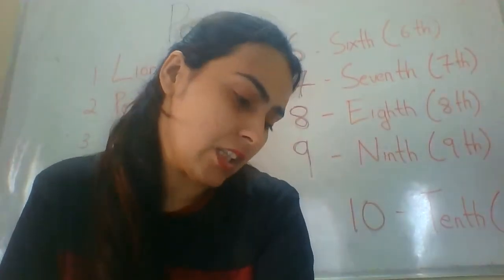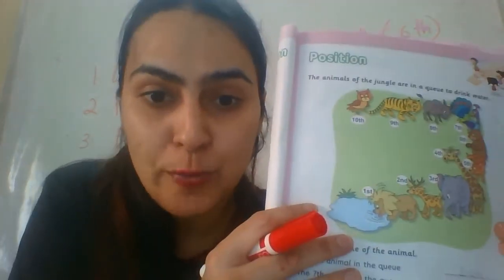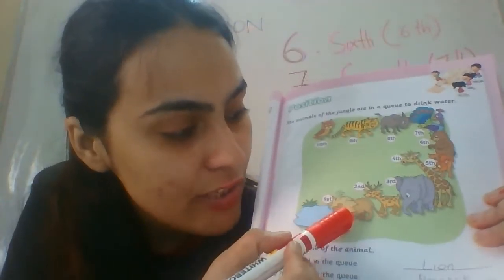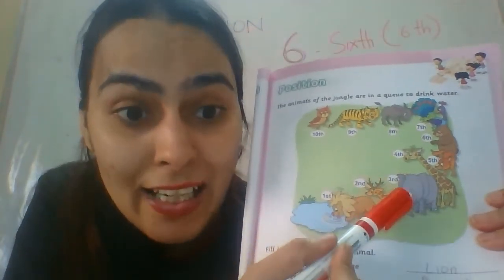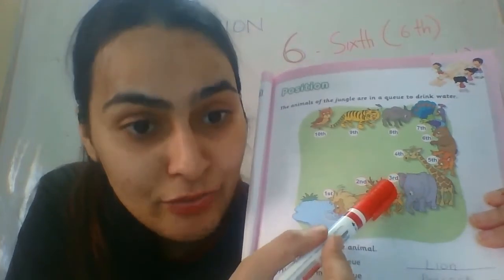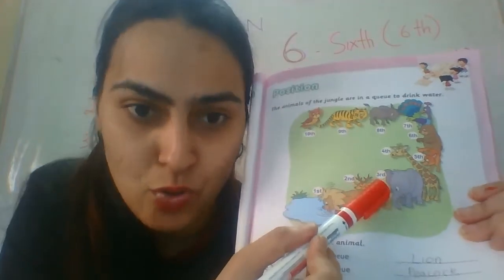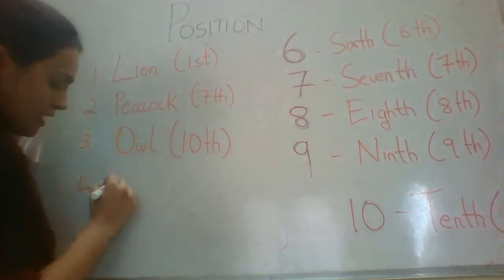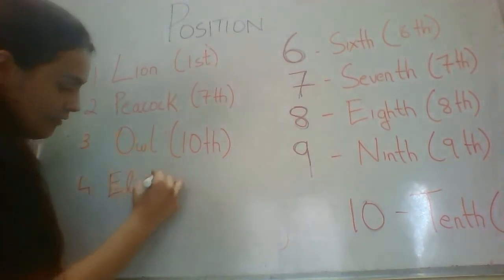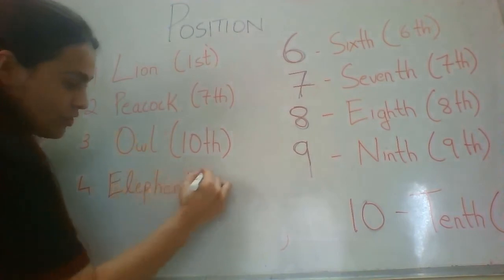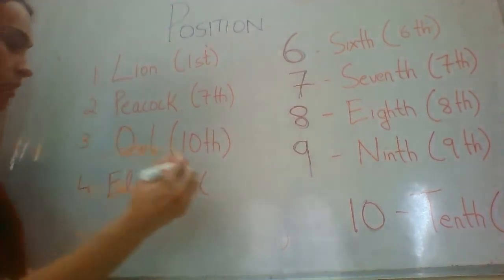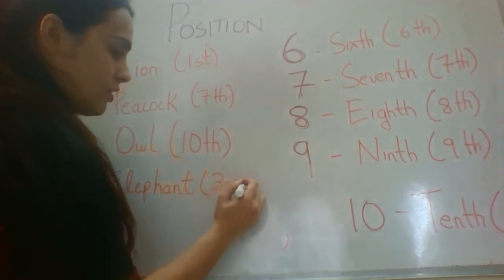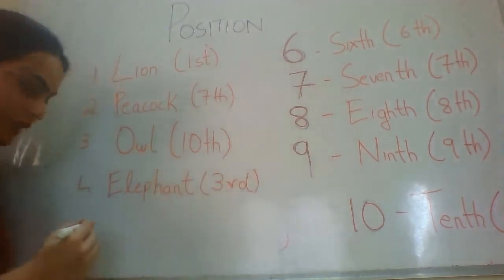The next question is: what is the third animal in the queue? The animals standing in line are: first we have lion, then we have a deer, and then we have an elephant. Elephant is on the third position. So the answer for question number four is elephant — elephant is on the third position.